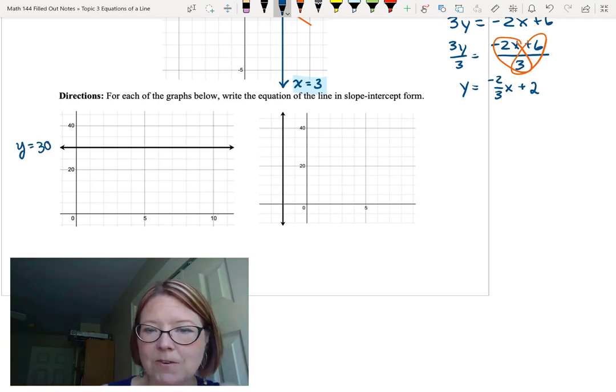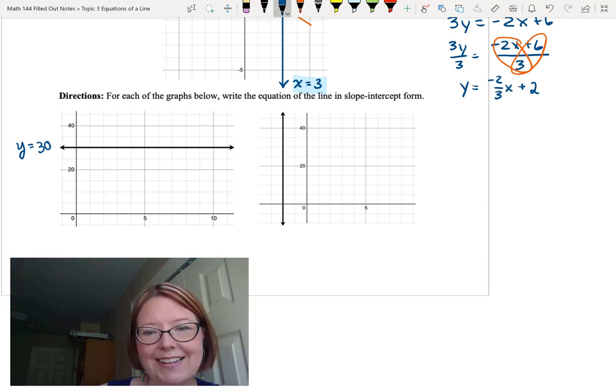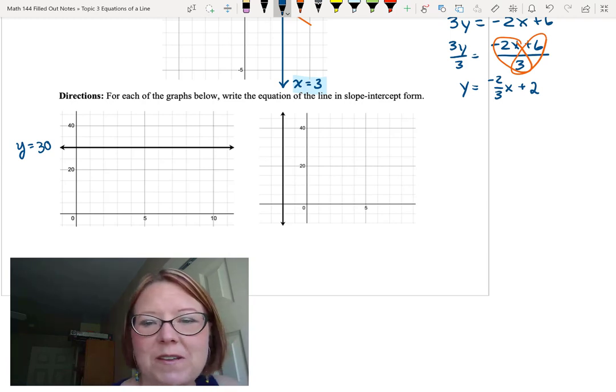The second line is a vertical line, and it hits the x-axis at x equals negative 2. The x value is always negative 2, no matter what the y value is. And that's why we call this vertical line x equals negative 2.